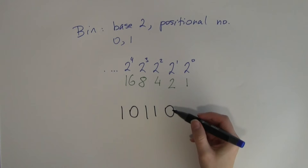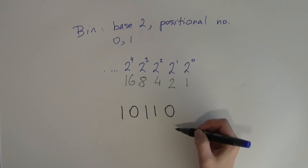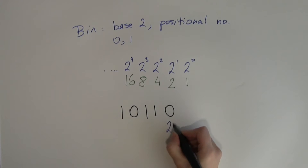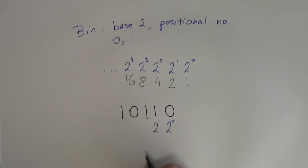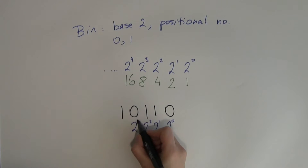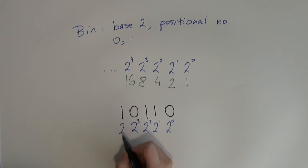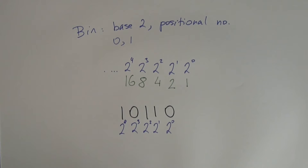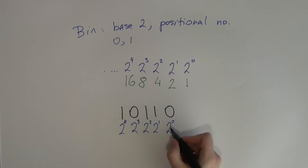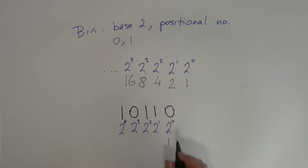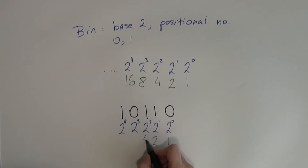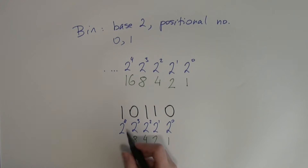What we can do is write every place value under each digit. So 2 to the 0, 2 to the 1, 2 to the 2, 2 to the 3, 2 to the 4. These numbers mean: 1, 2, 4, 8, 16.